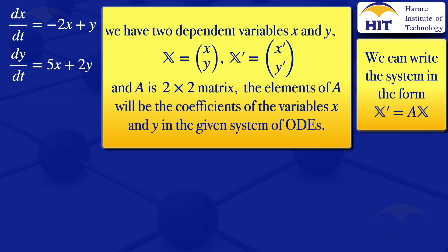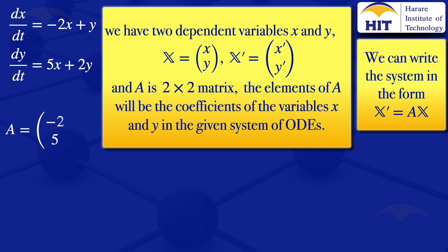Looking at the system of ODEs, for the first equation, the coefficient of X is minus 2, and the coefficient of Y is 1. For the second equation, the coefficient of X is 5, and the coefficient of Y is 2. Those coefficients form the matrix A, so A is the matrix with elements minus 2, 1, 5, 2.